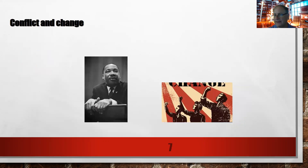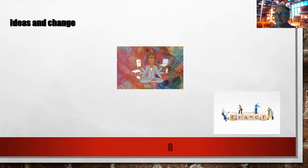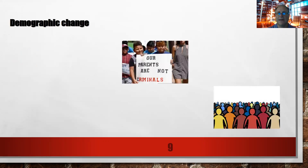Conflict and change: inequality and conflict within a society, such as racism, sexism, and homophobia, also produce social change. Ideas and change: social change can occur because of ideas. Demographic change includes, for example, an increasing elderly population, an increase in fewer people identifying with a religious group, and changes in immigration patterns.